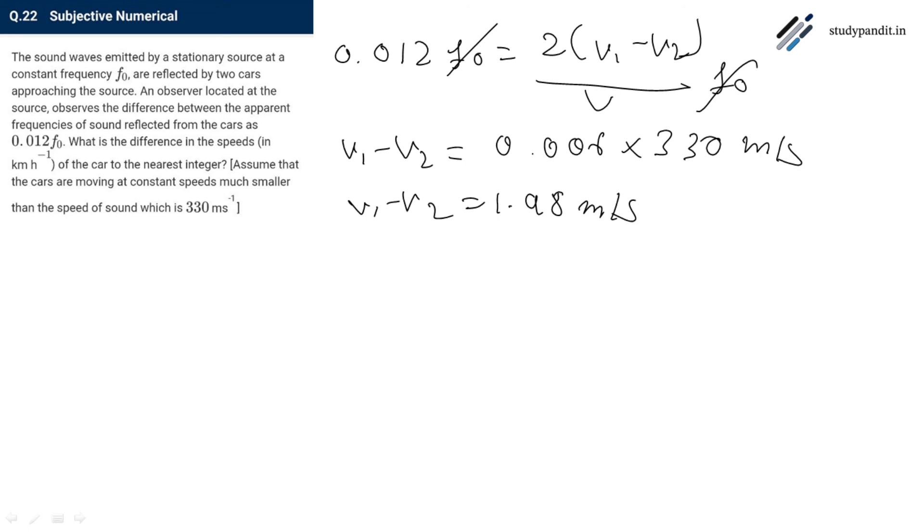But the question asks what is the difference in speed in kilometer per hour. So we will convert this into kilometer per hour, this is given as 1.98 into 18 by 5 factor, this will give you around almost 7 kilometer per hour. So the answer is equals to 7.